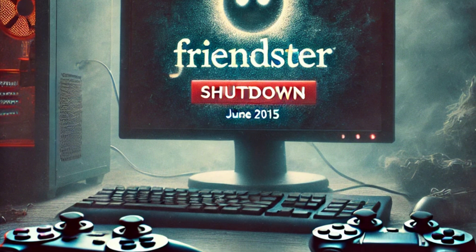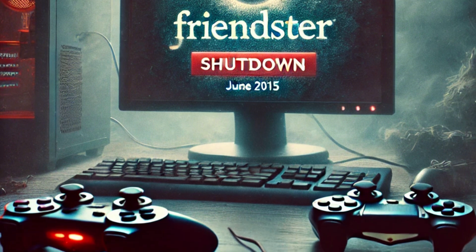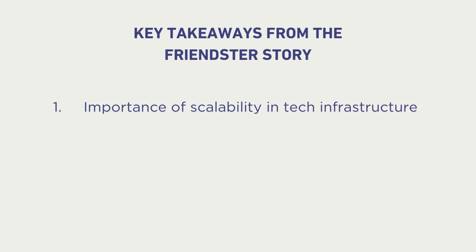The story of Friendster serves as a cautionary tale with several key takeaways. First and foremost, it highlights the critical importance of scalability in tech infrastructure — planning for growth from the outset can prevent technical issues that alienate users. Secondly, Friendster's decline underscores the importance of prioritizing user experience, which is critical for retaining users on any online platform.